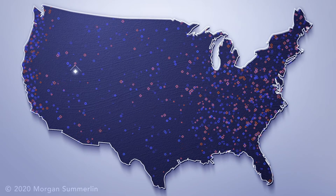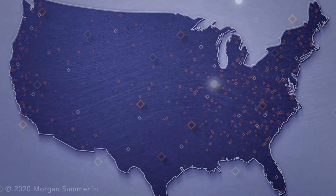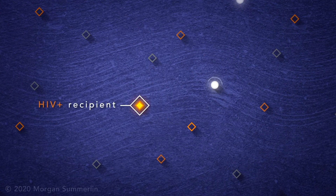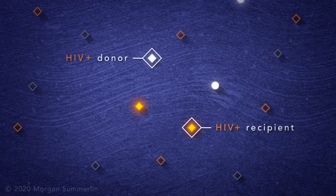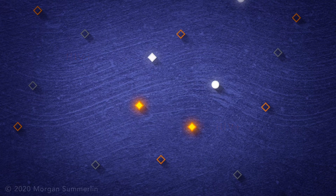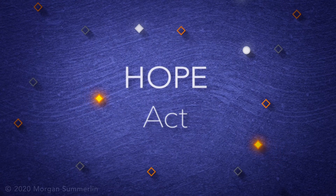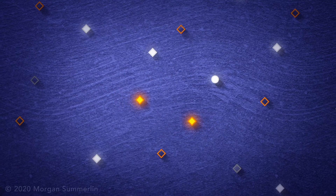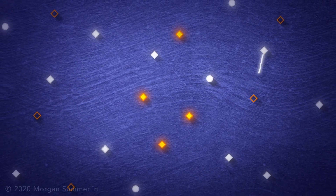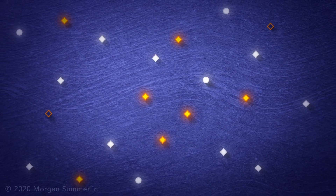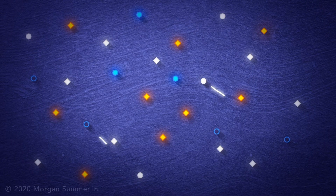In the past, organs from donors with HIV were considered unsafe and were banned from use in transplantation. Historically, people with HIV received organ donations from people without HIV. However, studies show that they can also receive organs from people with HIV, with equally successful outcomes. The HIV Organ Policy Equity Act, or HOPE Act, was passed in 2013 and legalized transplanting organs from donors with HIV to people who also have HIV. Thanks to the HOPE Act, people in need of an organ are more likely to receive a transplant. Transplanting organs between donors and recipients with HIV provides more organs for people without HIV, and creates more life-saving transplants every year.